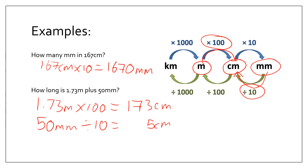Now let's add those together. We've got 173 plus 5: 3 plus 5 is 8, 7 carries through, 1 carries through — so we get 178 centimeters. And that's about all you need to know around length and unit conversions.